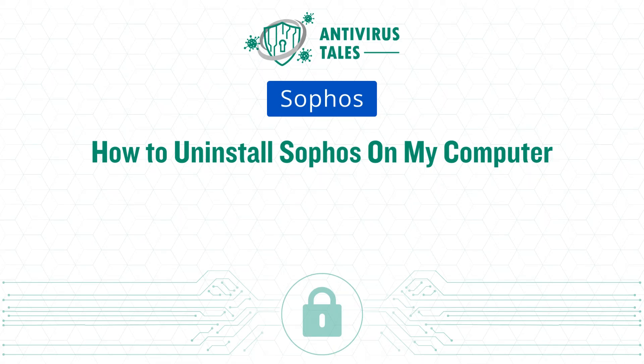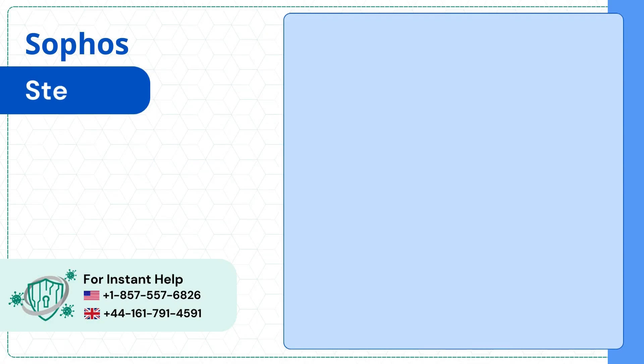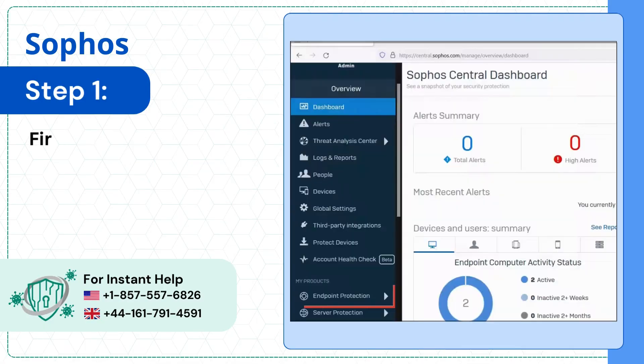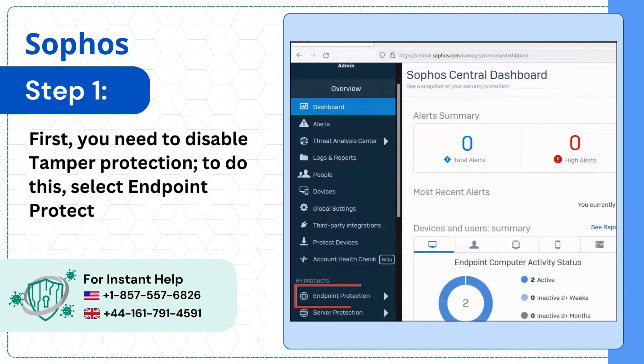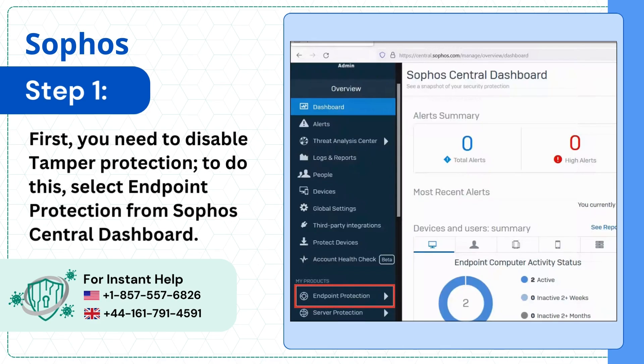How to uninstall Sophos on my computer. Step 1: First you need to disable tamper protection. To do this, select Endpoint Protection from the Sophos Central Dashboard.